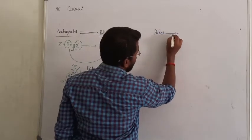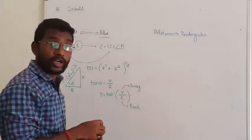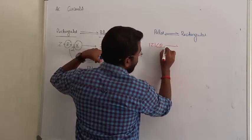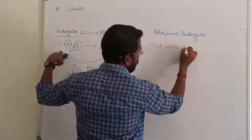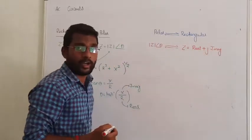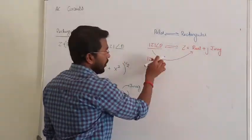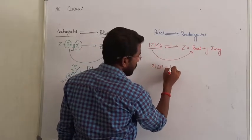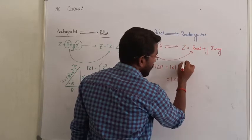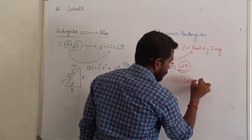Second method is polar to rectangular. When we are going from polar to rectangle, suppose polar is mod Z at an angle of theta. In rectangular form, Z equals real part plus j imaginary part. You have to write mod Z at an angle of theta as mod Z dot e power j theta. That is a complex exponential quantity. According to Euler's expansion, it can be written as mod Z into cos theta plus j into sin theta.